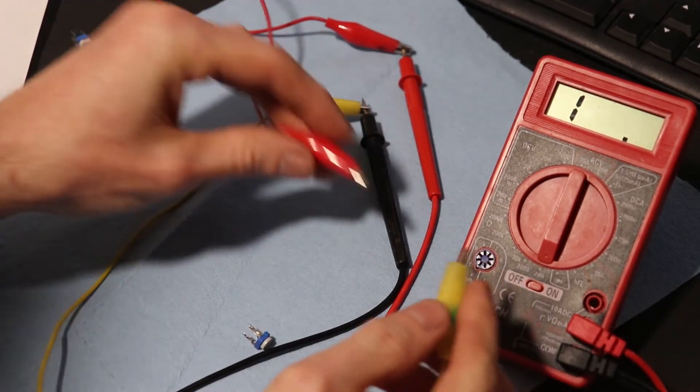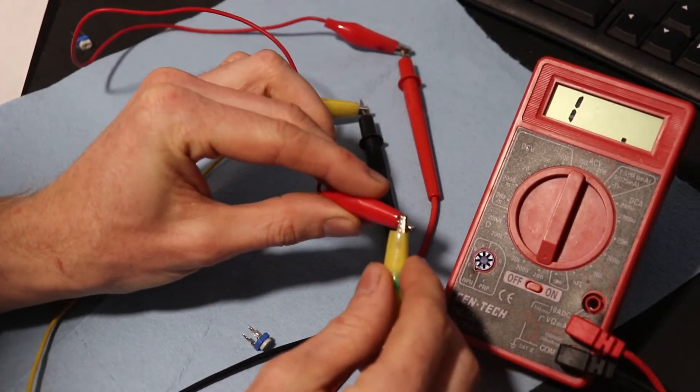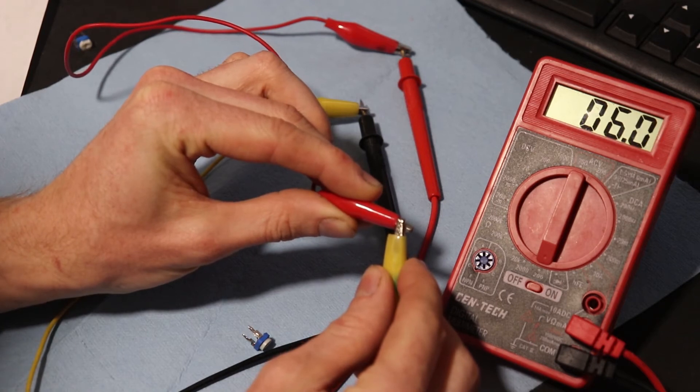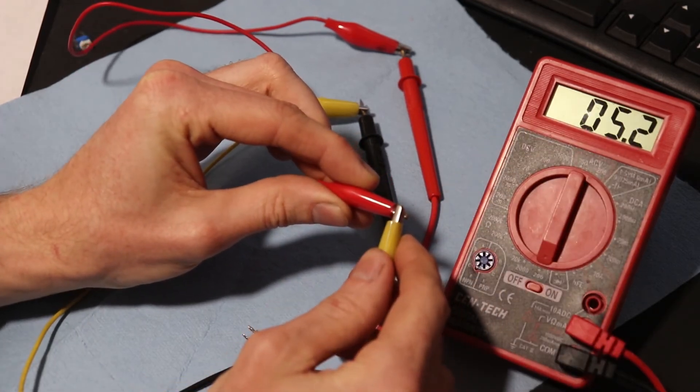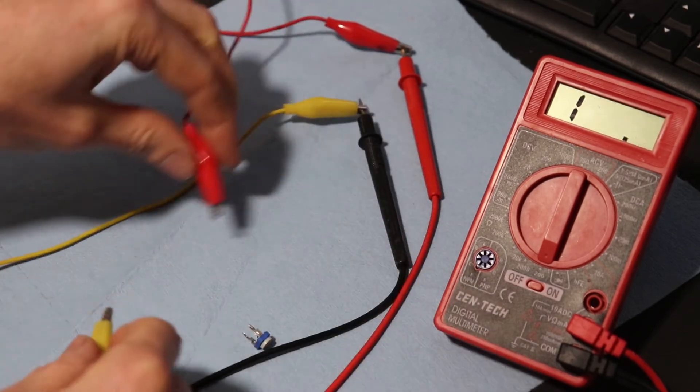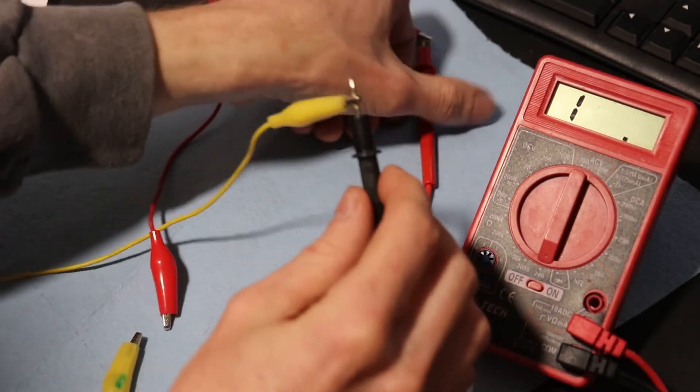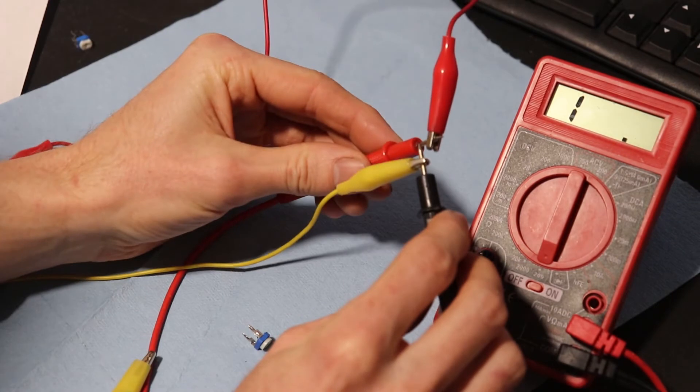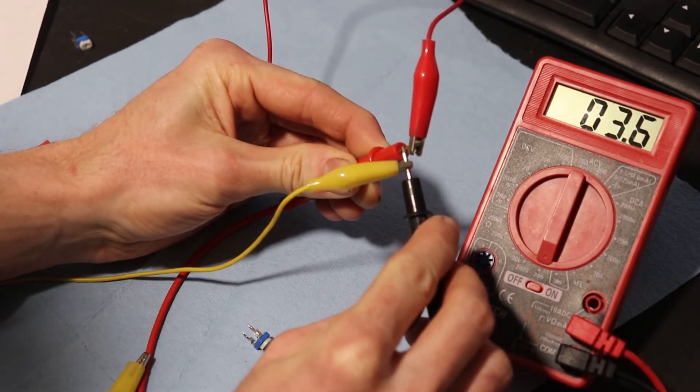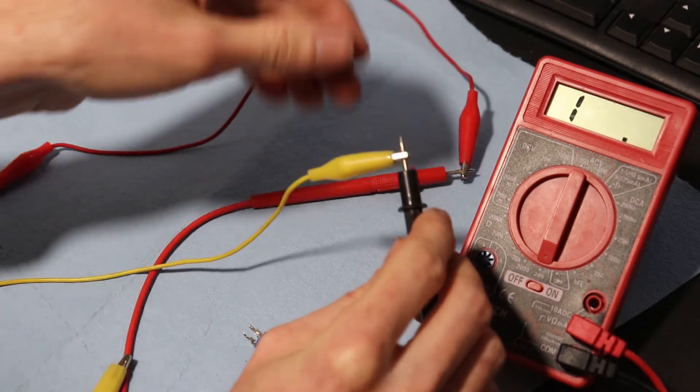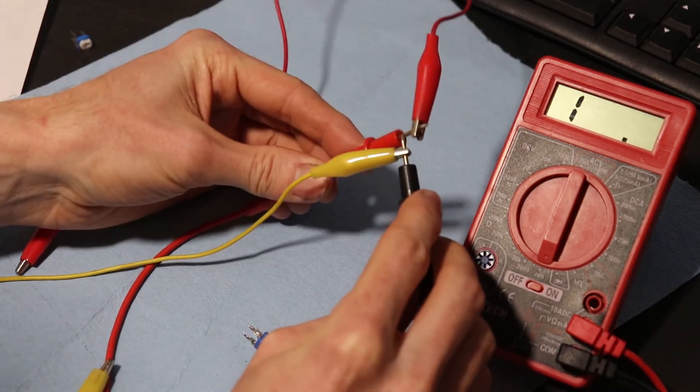Now one thing you can do to make sure your leads are good is you connect these two to each other and you get a very low reading. See, I have about five there. I think the jumpers probably have a little bit resistance as well. So yeah, that brings it down to about three. That's pretty typical with just the pointers there.